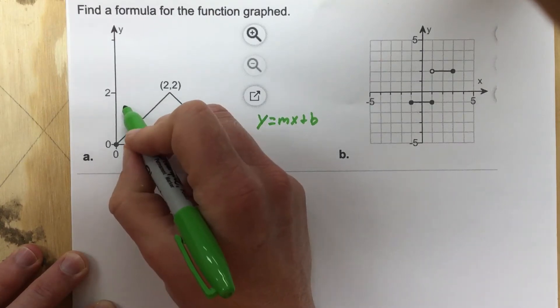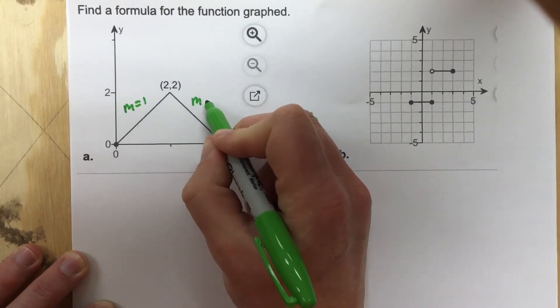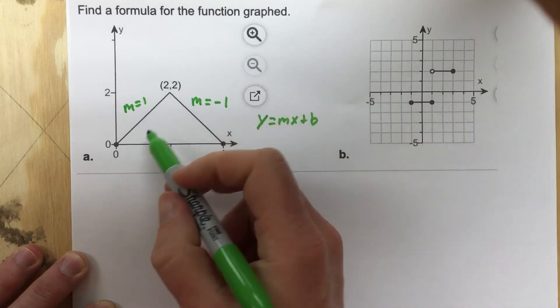For this line, we're going to say that this is m equals 1. This line is m equals negative 1 because it goes down 2 and over 2, so it's the opposite slope.